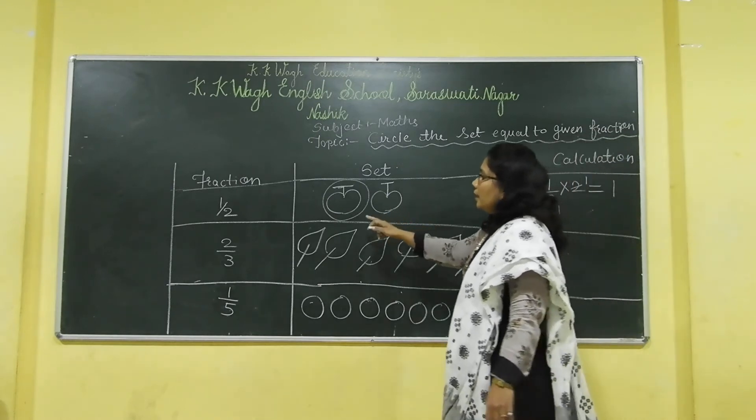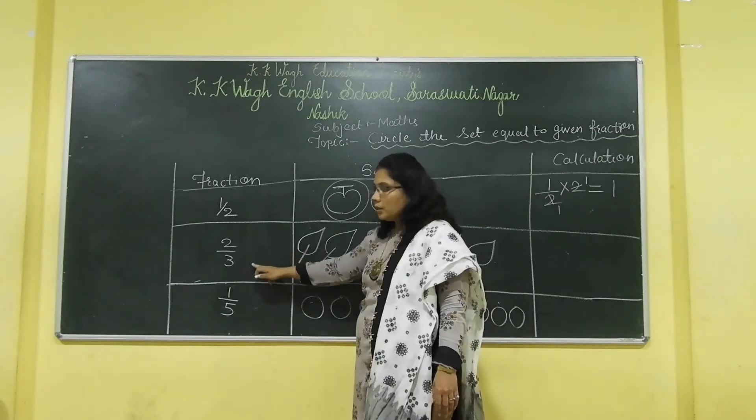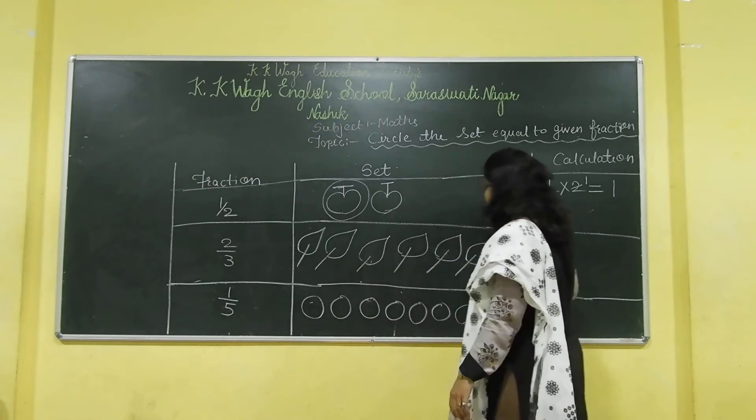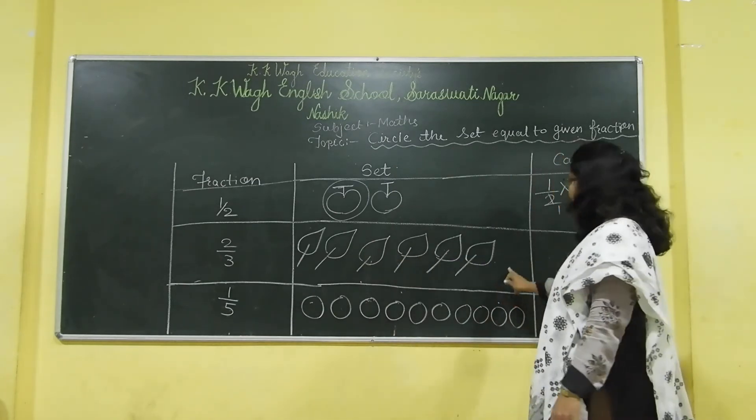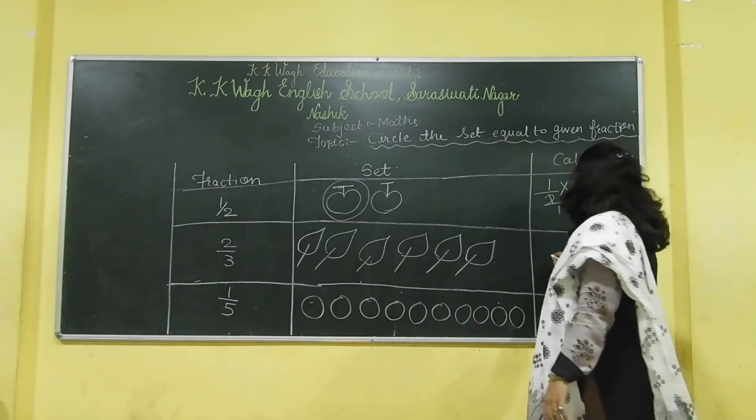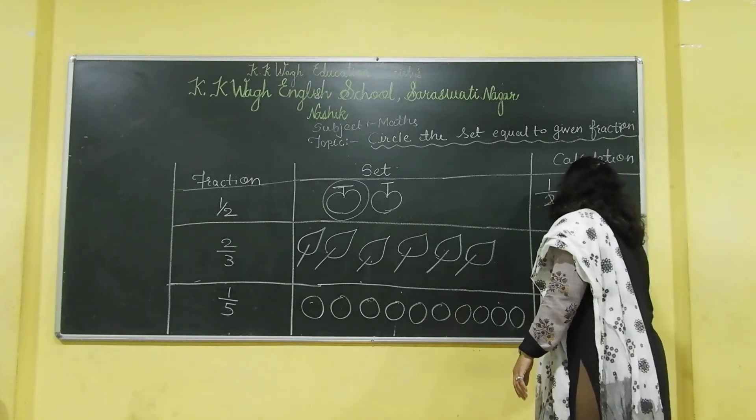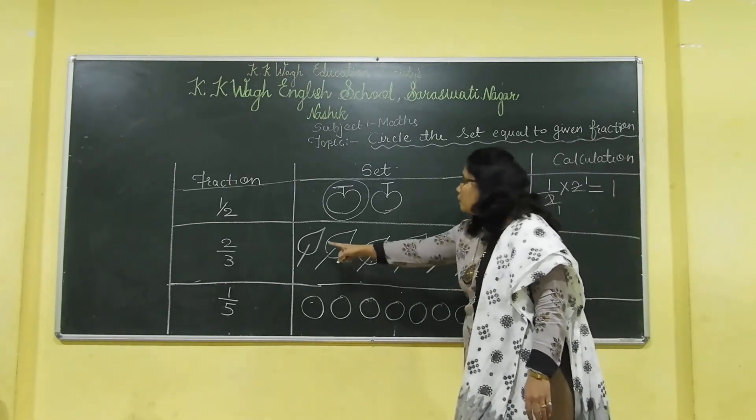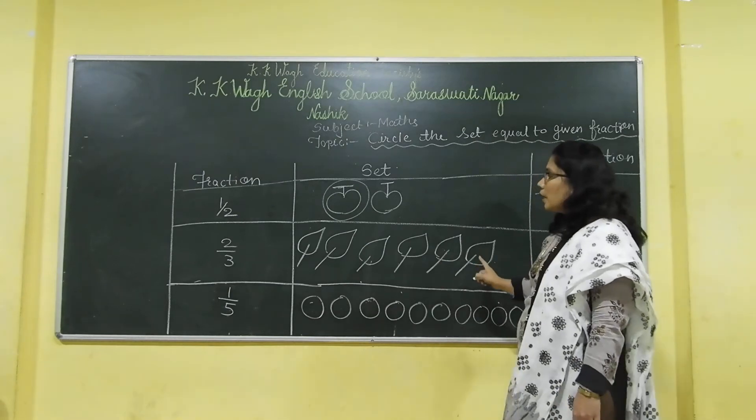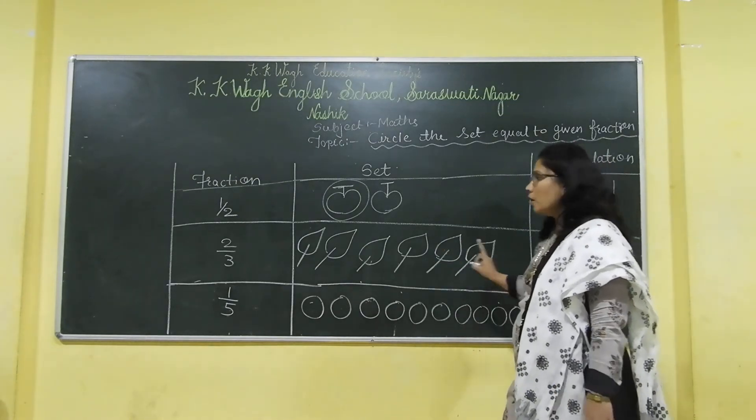Now, we will come to the next fraction. It is 2 upon 3. And number of leaves here. You have to count the number of leaves. First of all, you write here, 2 upon 3.